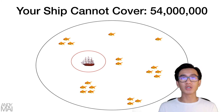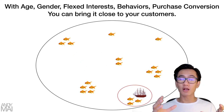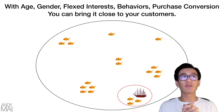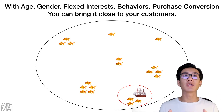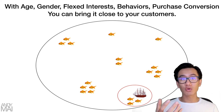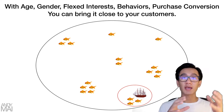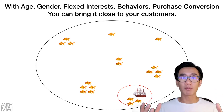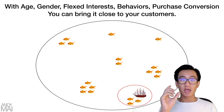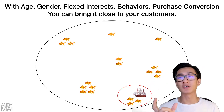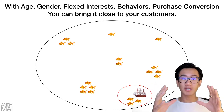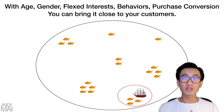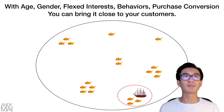It's only going to cover a small portion, and that portion will get close to the fishers. If you go ahead and narrow it by age, gender, or flex with interests — things your customers are highly into, such as camping brands, behaviors — and optimize for purchase conversion, that's big. If you optimize for purchase conversion, Facebook is automatically going to send your ship closer to where all the fish are, and this will bring you close to your customers.